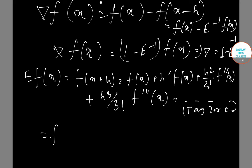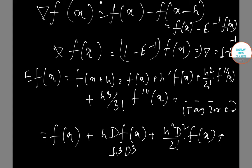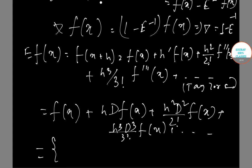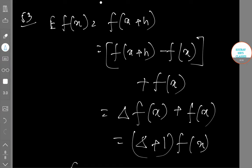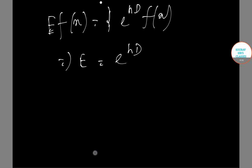This gives us f(x) plus hD f(x) plus h squared D squared by 2 factorial f(x) plus h cubed D cubed by 3 factorial f(x) and it goes on. That means (1 + hD + h squared D squared by 2 factorial + h cubed D cubed by 3 factorial + ...)f(x). So E[f(x)] equals e to the power hD multiplied by f(x), that is E equals e to the power hD.